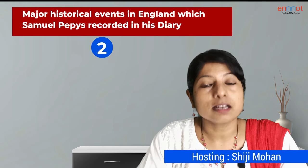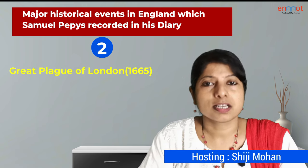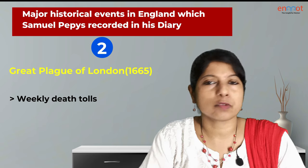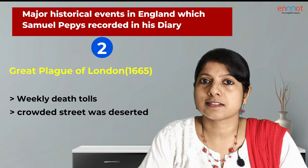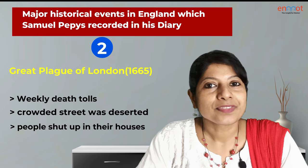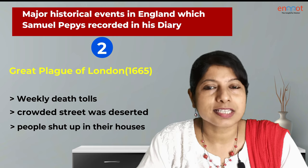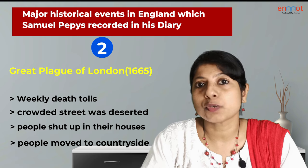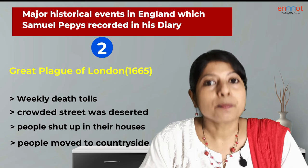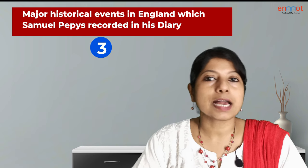The second major event that Samuel Pepys recorded in his diary is the Great Plague of London, which began in 1665. He recorded the weekly death tolls and expressed shock at how a street that was once crowded turned out to be completely deserted. The houses were 'shut up' — a term used by his contemporaries instead of 'quarantine.' He mentioned how his friends and colleagues moved from the plague-stricken city to the countryside hoping it would save them from the fatal disease. However, Samuel Pepys remained in the city and stayed back during these adverse times.